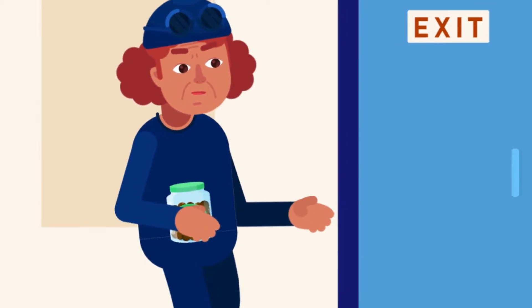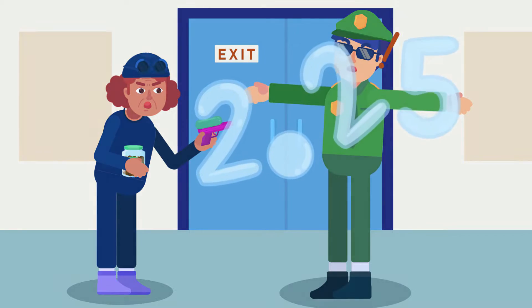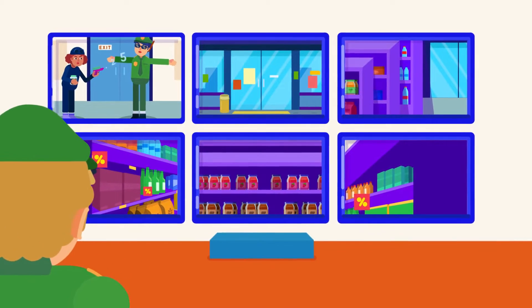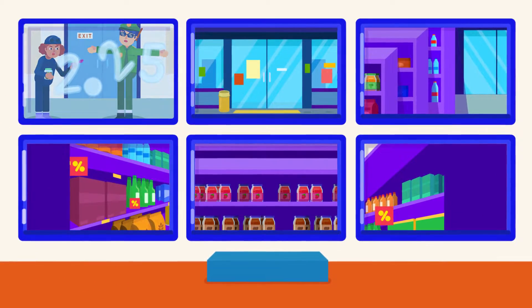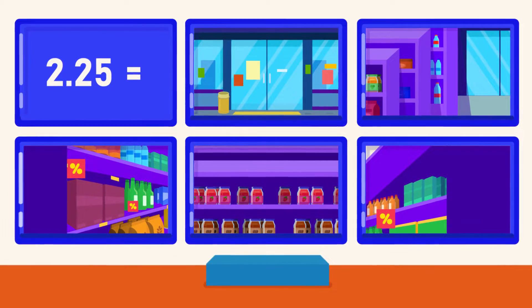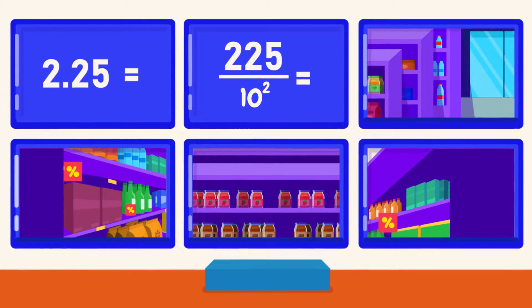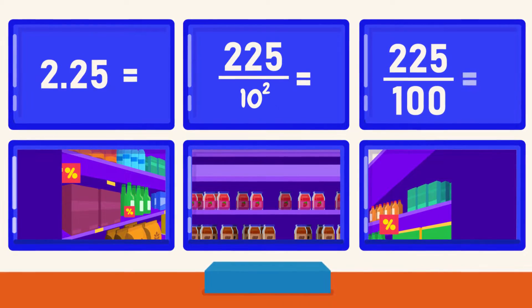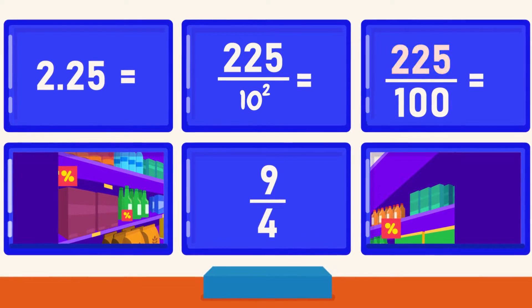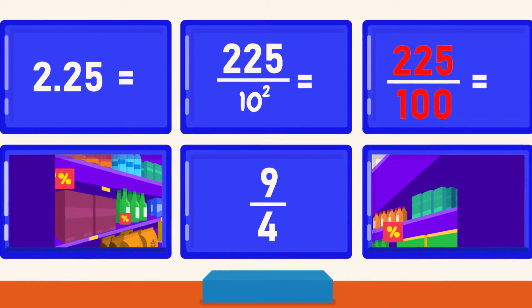Now it is your turn to do the conversion from decimal to fraction. Convert 2.25 to a fraction. You can pause the video, have a go, and then resume the video to see the problem-solving process. First, we will count the number of spaces after the decimal point, counting from the left. The number of spaces is 2. Therefore, once we remove the decimal, the number will be divided by 10 to the power 2. So, 2.25 equals 225 over 100, equals 9 over 4. 9 over 4 is obtained when we simplify 225 over 100 by dividing both the numerator and the denominator with a common divisor of 25.